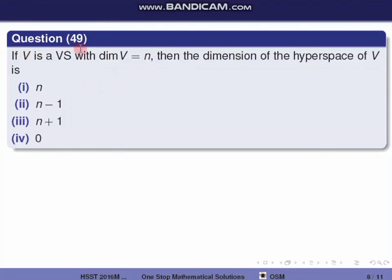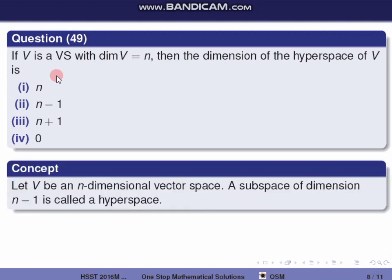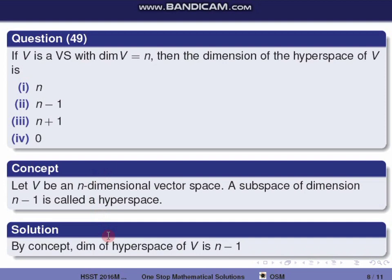Next question, question 49. If V is a vector space with dimension n, then the dimension of a hyperspace of V is n−1. Any subspace of codimension 1 is a hyperspace, so its dimension is n−1. The correct option is the second one.